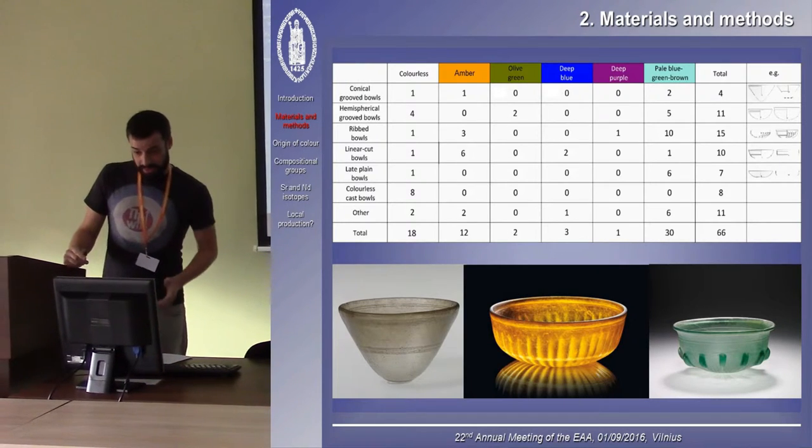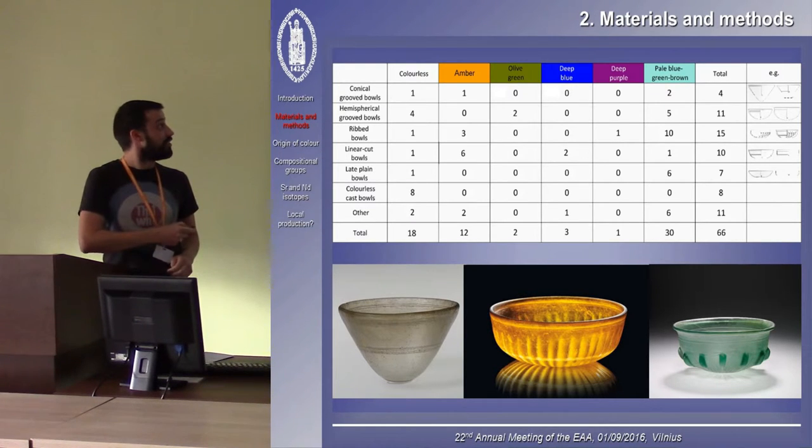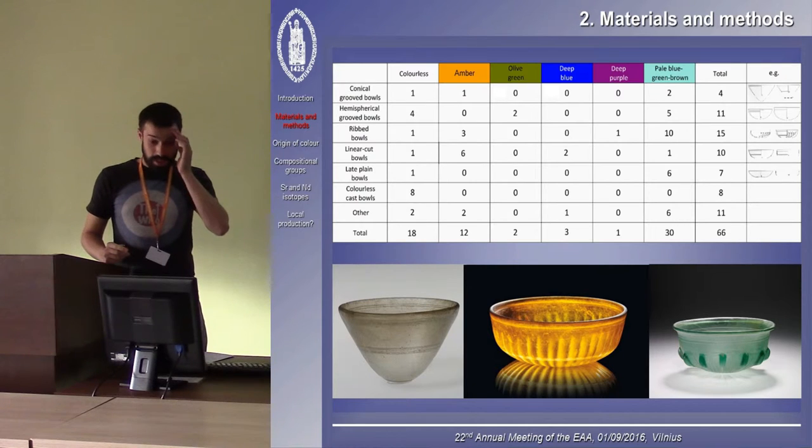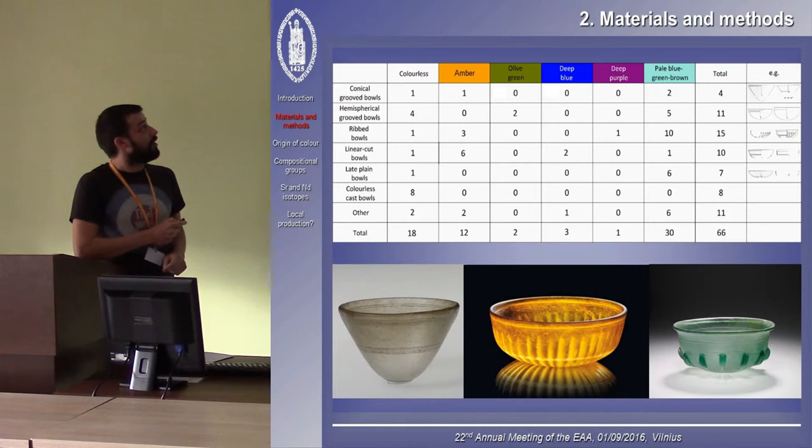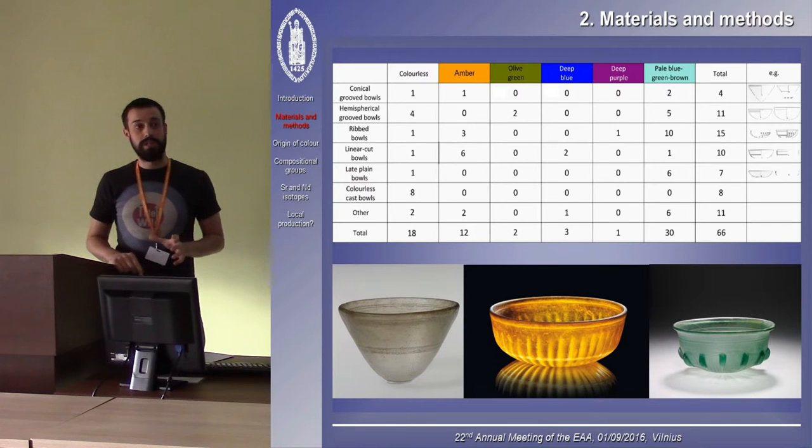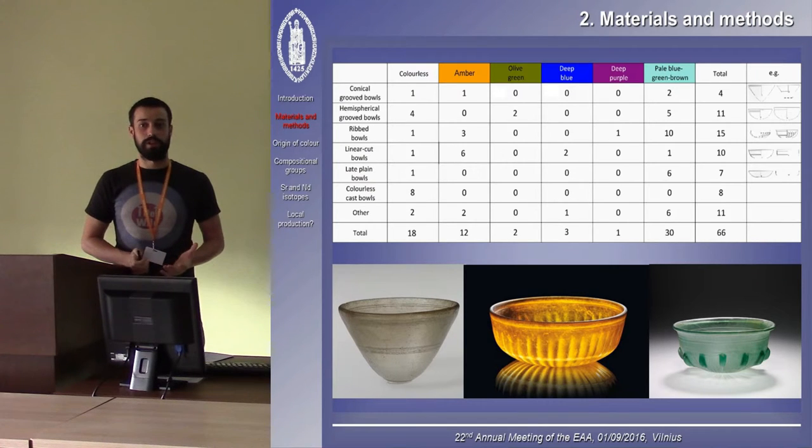We selected 66 glass fragments from cast glass bowls, such as these, which corresponded to seven different typological groups, which I won't discuss today. Among these samples were 18 colorless glasses, 12 were deep yellow or amber, a few olive green, deep blue and purple, and the remaining 30 samples were pale-colored with light tints of green or blue. We might consider these as naturally colored.